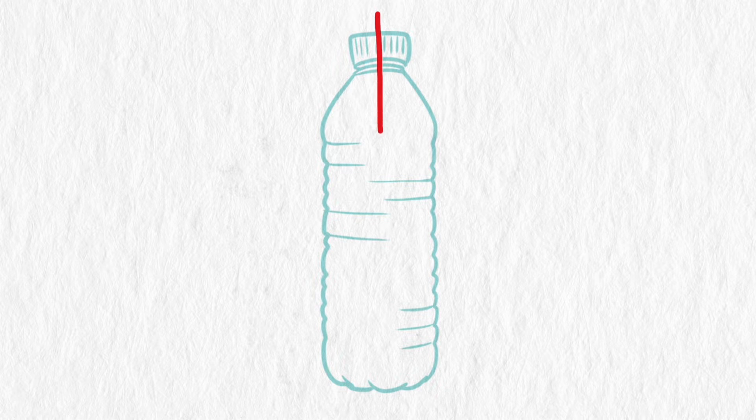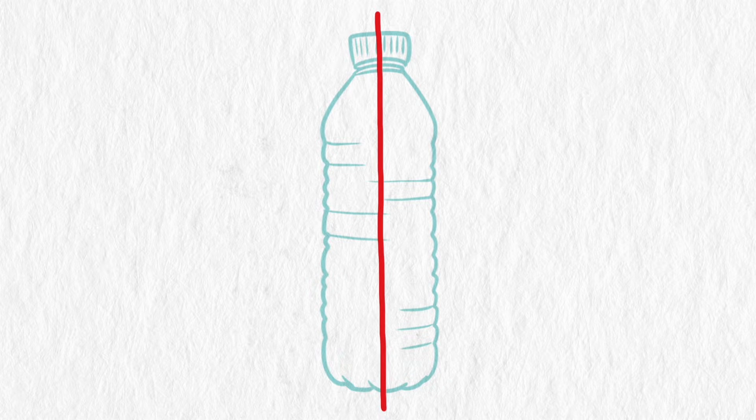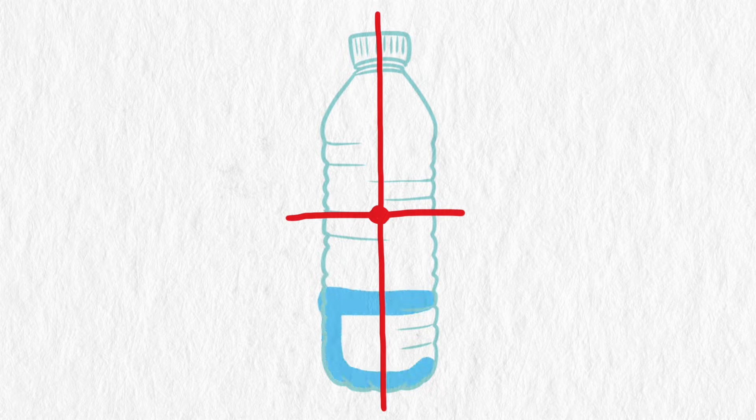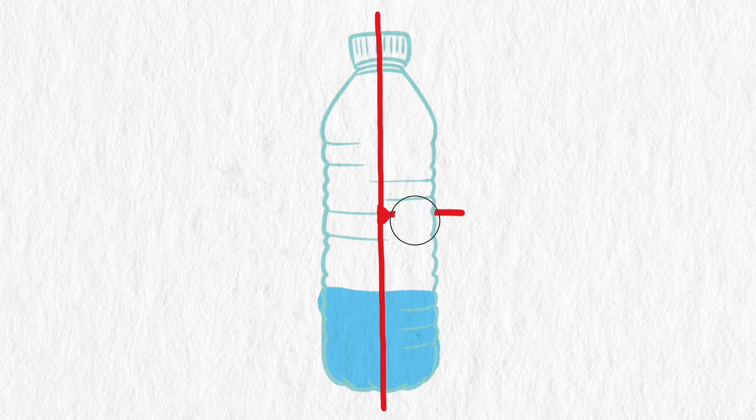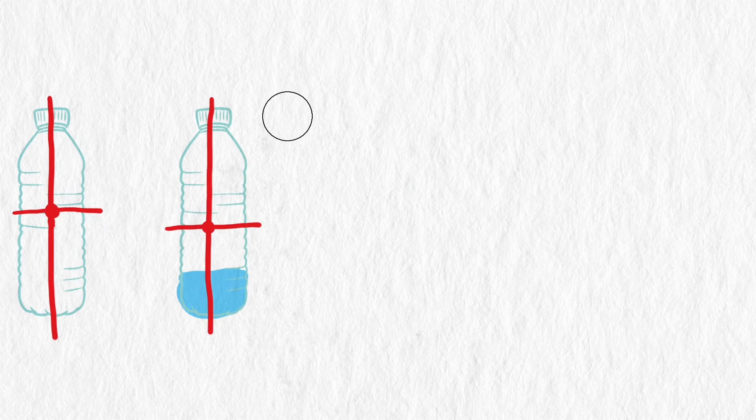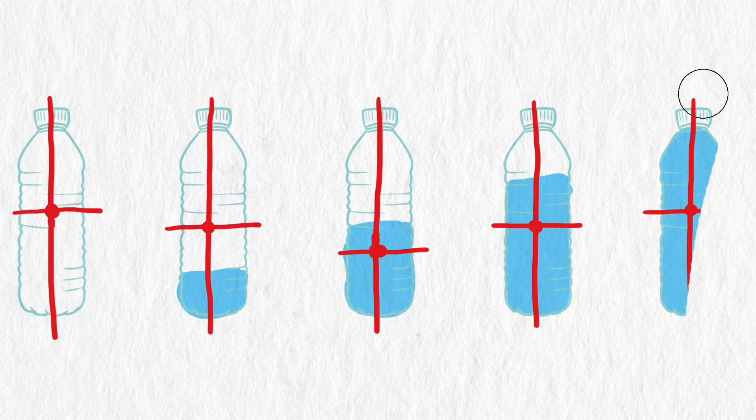As we add water to an empty bottle, the center of gravity of the combined water and bottle system lowers. An empty bottle has center of gravity about halfway up the bottle. Because the bottle is so light, even a little water at the bottom of the bottle will substantially lower the center of gravity. However, if we keep adding water, eventually the center of gravity will start going up again because the full bottle will have the same center of gravity as the empty bottle.